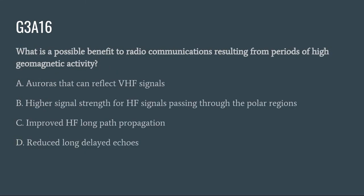G3A16: What is a possible benefit to radio communications resulting from periods of high geomagnetic activity? A. Auroras that can reflect VHF signals. B. Higher signal strength for HF signals passing through the polar regions. C. Improved HF long-path propagation. Or D. Reduced long-delayed echoes. The correct answer is A: auroras can reflect VHF signals.